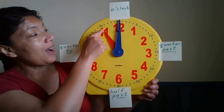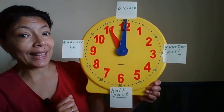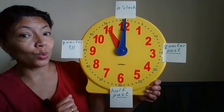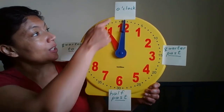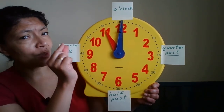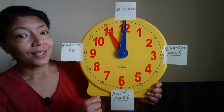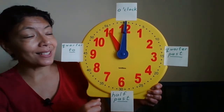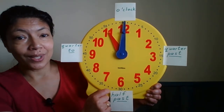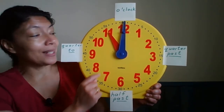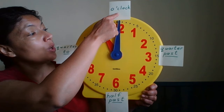Now it is 11 o'clock. The small hand is on the eleven. The big hand is on the twelve. So it is eleven o'clock.